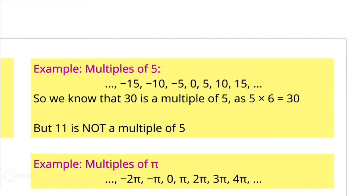In exercise 3 you must find the multiples of pi. You can say that multiples of anything require multiplying by an integer, but the number being multiplied can be anything. So we have: minus infinity, minus 2pi, minus pi, 0, pi, 2pi, and plus infinity.